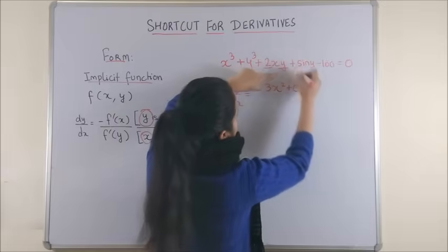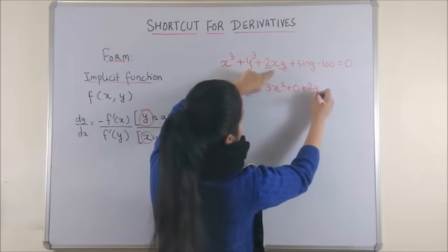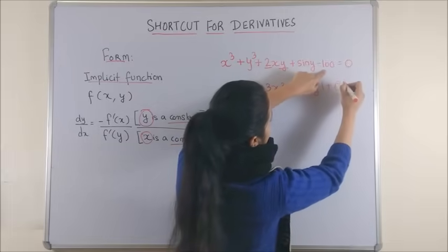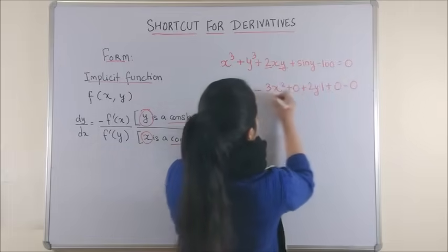y has to be treated as a constant, so it's a 0. Now, 2 and y are the constants and derivative of x is simply 1. sin y becomes the constant, so it's 0. 100 becomes 0.